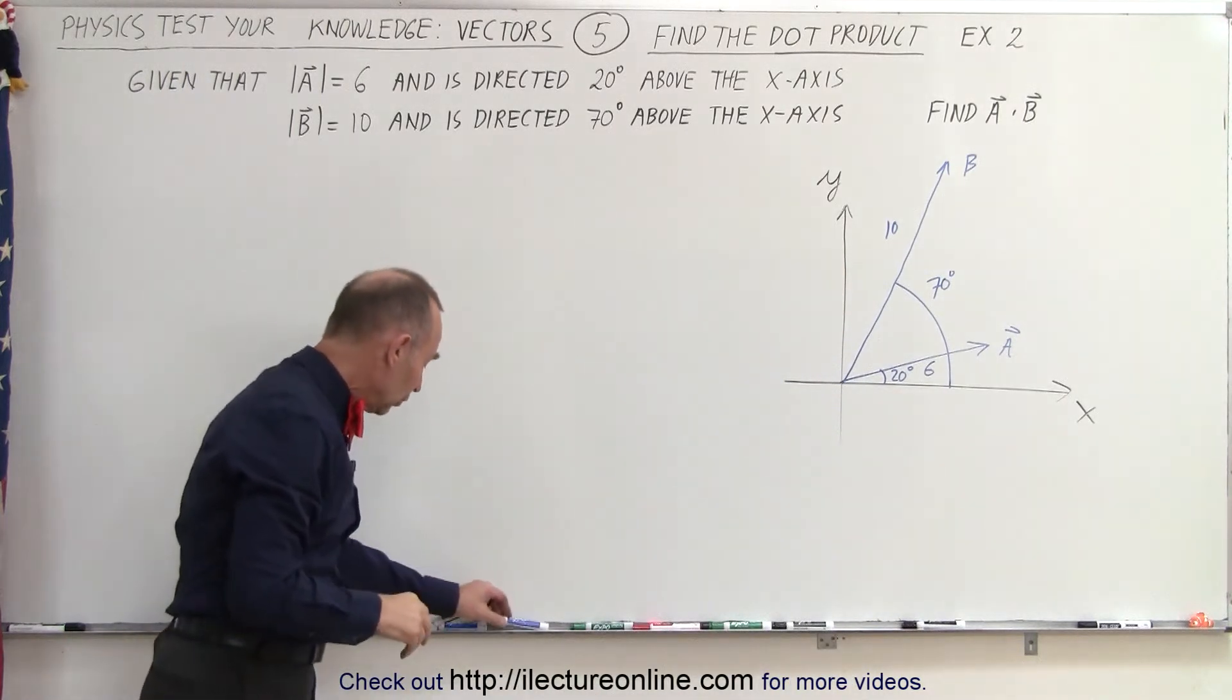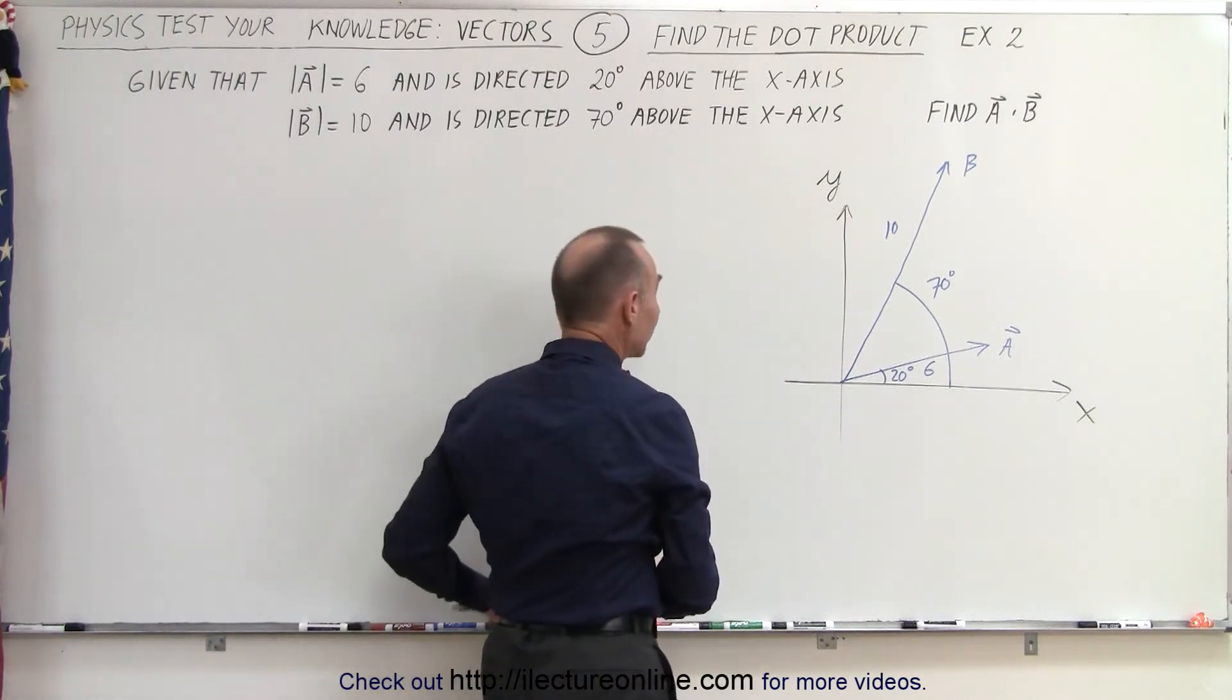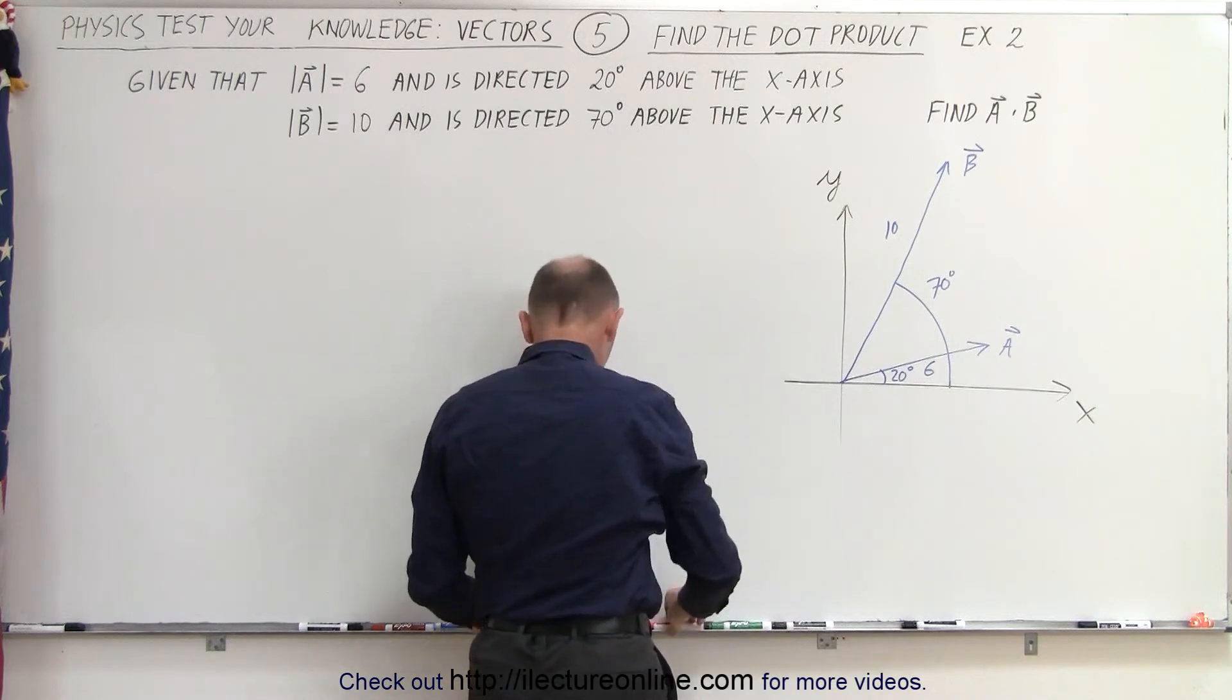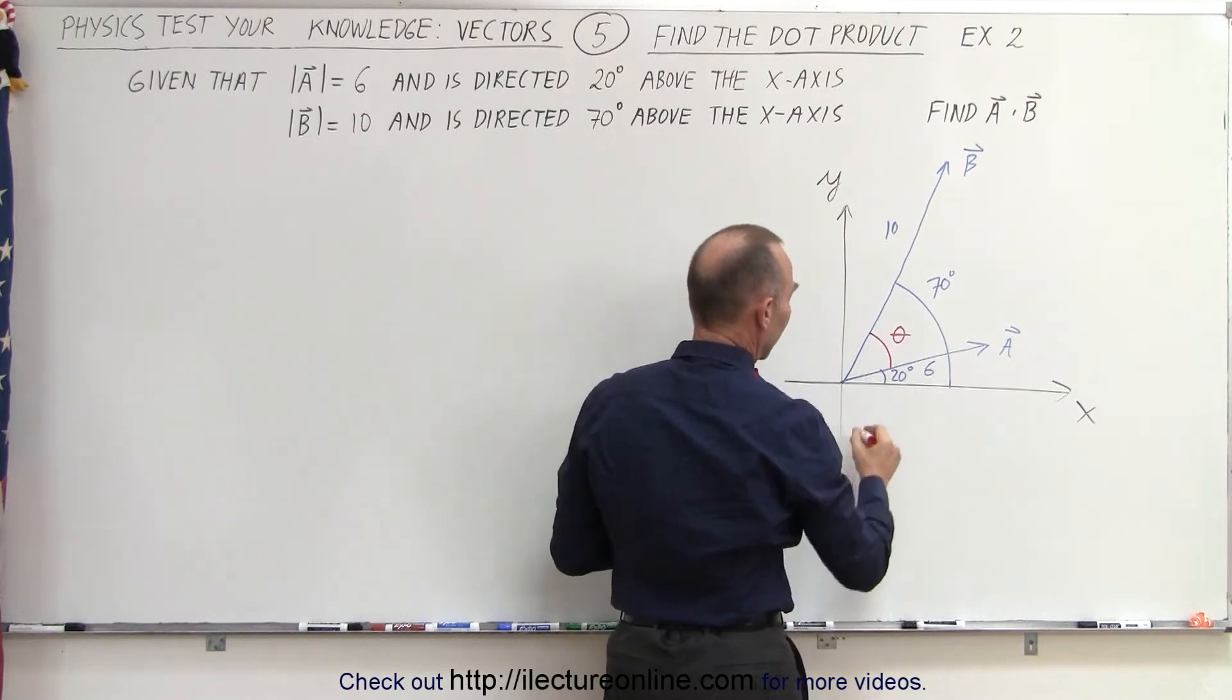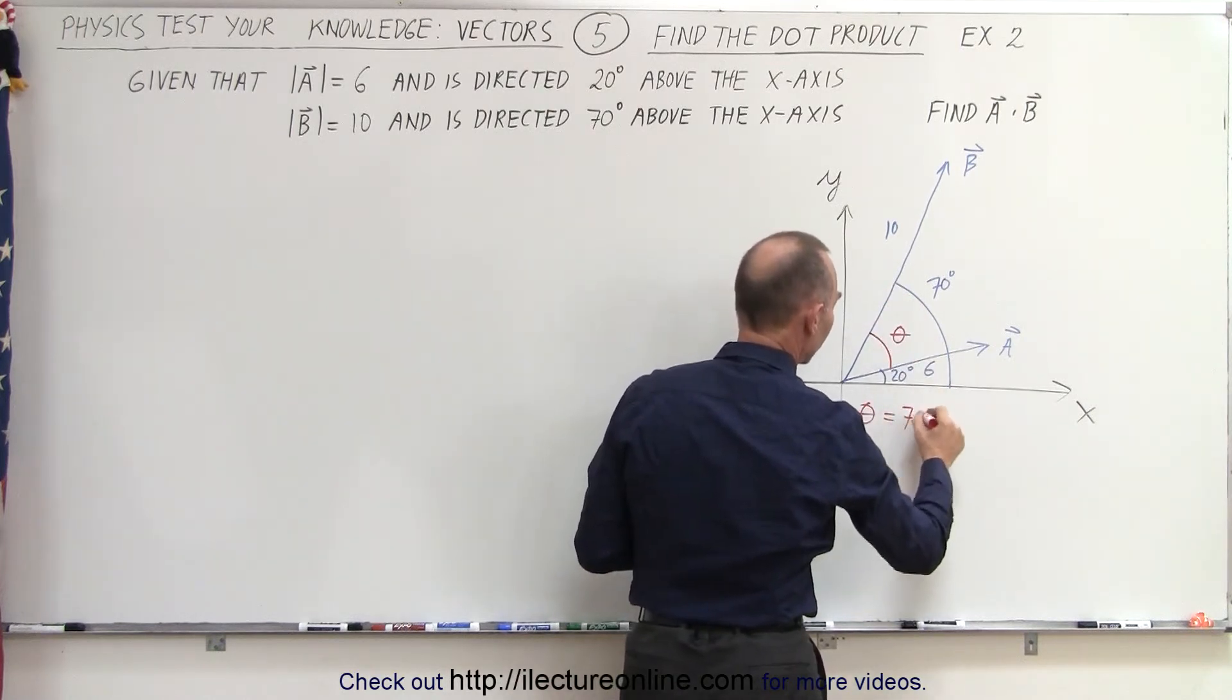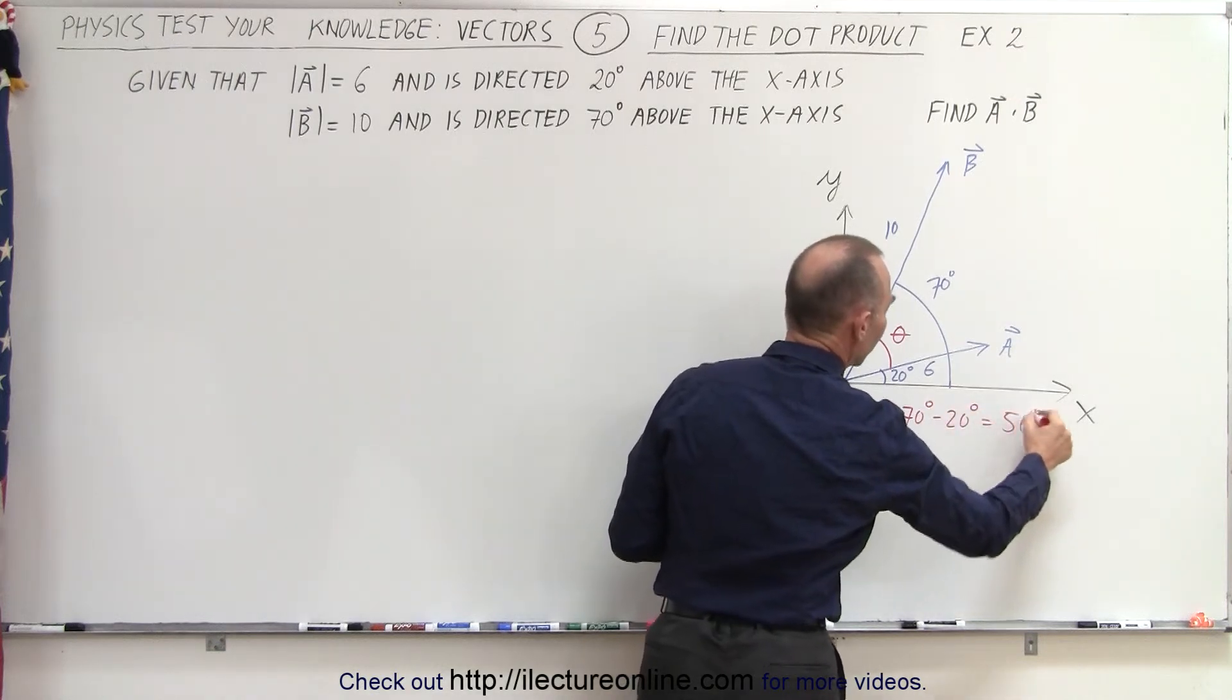Now we can denote the angle between the B vector and the A vector, and I should put a little line on top so that we can see it's a vector. So here we have the angle now between the two. Let's call it angle theta, and the angle theta is going to be equal to the difference between those two angles, which is 70 degrees minus 20 degrees, which is 50 degrees.